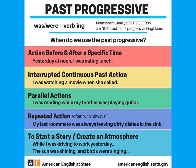Let's move on to the past progressive. The past progressive is also known as the past continuous tense, just like the present progressive. To form the past progressive, you use the verb to be — was and were — plus the action, and you add -ing to the end.